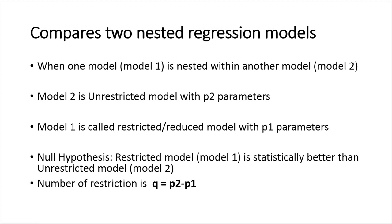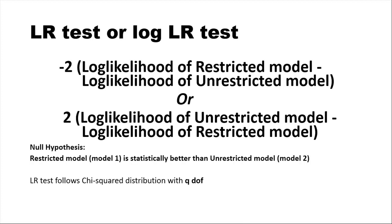The null hypothesis here is that the restricted model is statistically better compared to the unrestricted model. The formula — I am just putting the formula here without going into the derivation — is: minus 2 times the log likelihood of the restricted model minus the log likelihood of the unrestricted model.